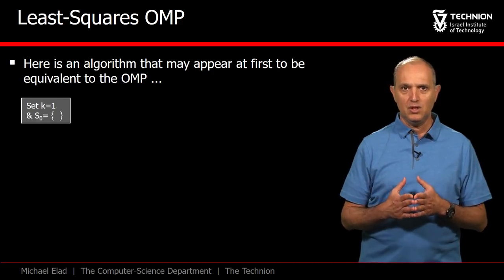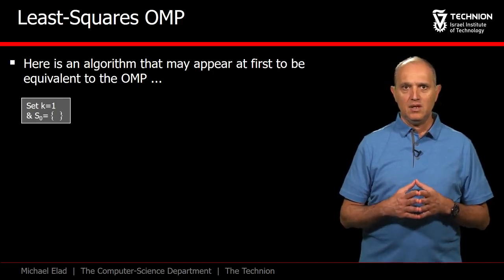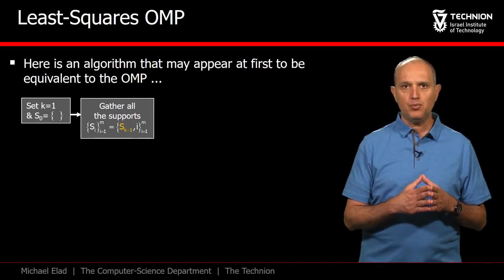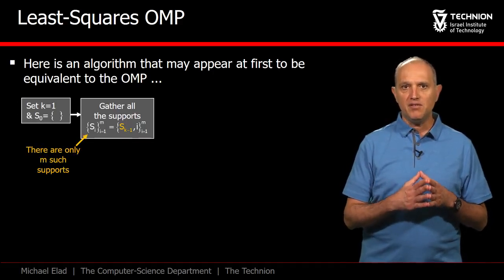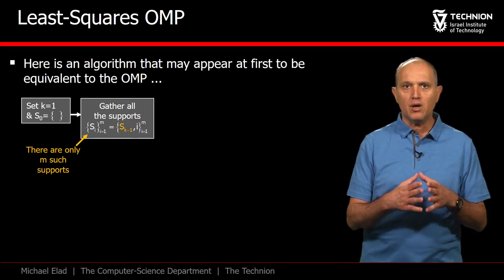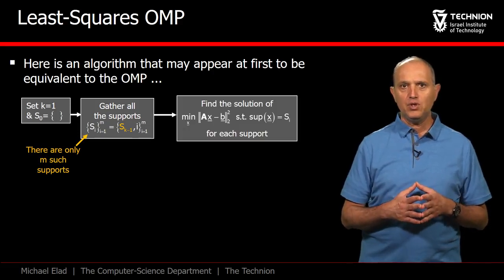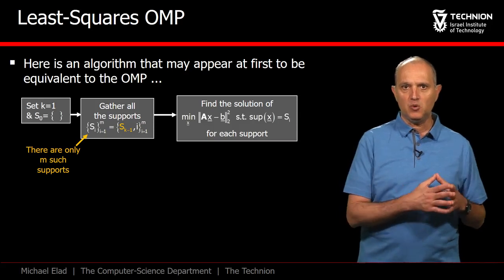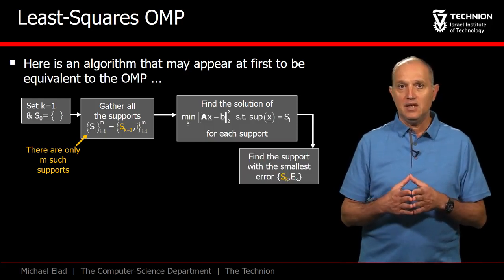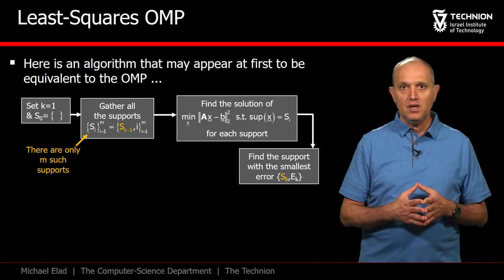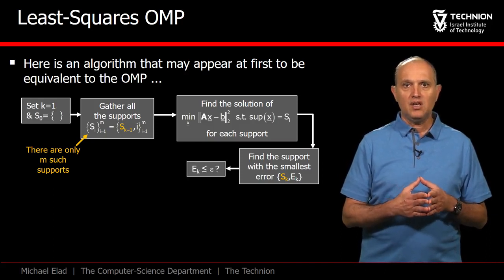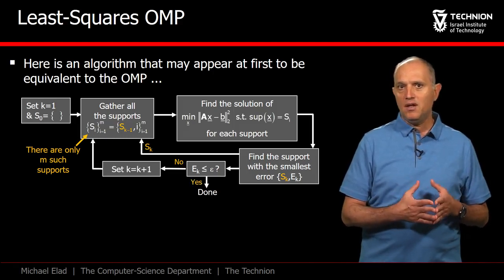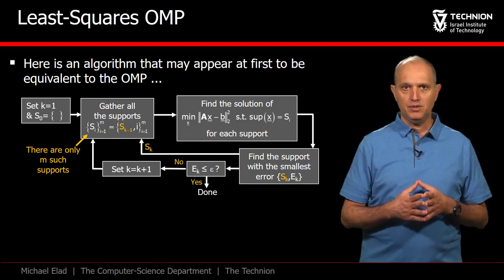We initialize the support as an empty set and set k to be 1. We define a group of m supports to explore, each being the given support augmented with one of the columns from A. Per each, we solve a constrained least squares that approximates b with the tested support. Each of these tests ends up with an error measure, and we choose the support that gave the lowest error value. If this error is small enough, we are done; otherwise, we increase k by 1 and proceed.